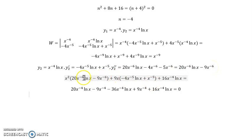Now if we substitute these into our original equation, it was x squared times y double prime, which is this guy, and then our original y, x to the negative 4 natural log of x.